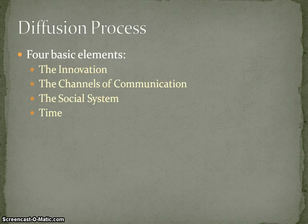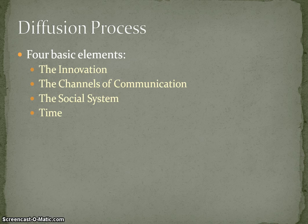In the diffusion process there are four basic elements. One is called innovation, second is channel of communication, third is social system, and the fourth is time. Each of these gives you an idea about what innovation is, how channels of communication play a major role, how the social system around us influences decisions on new products, and how long we really take to buy a product.